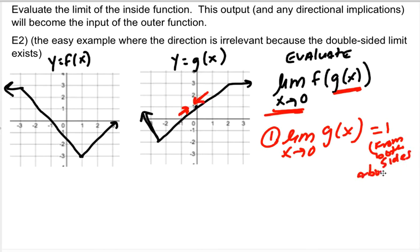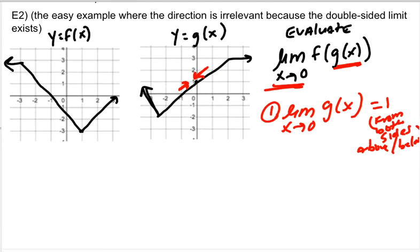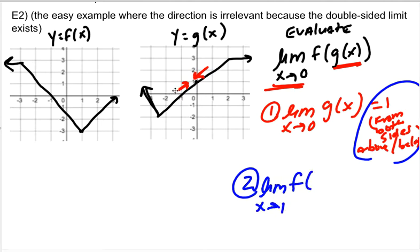So that means that when I go to plug it in, I can go ahead and plug it in as the double-sided limit. So this output becomes my input to the f function. So now I'm going to do the limit as x approaches 1. I don't need a directional indicator because notice that these two red arrows were approaching from both above and below. So I want the limit as x approaches 1 of f(x). Well, I look and I see that f is continuous there. So it's a negative 3.